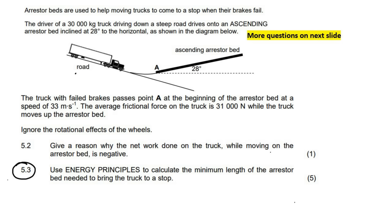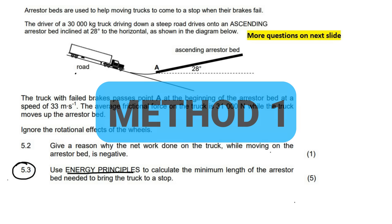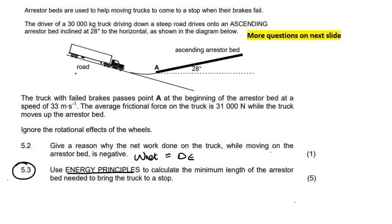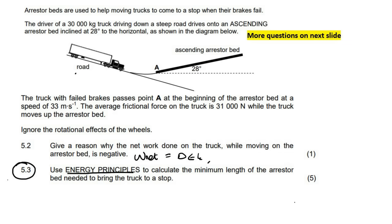I will show you two slightly different ways that learners like to handle this. When they say energy principles, that could be the W_net equals delta E_k formula, or it could be the W_NC equals delta E_k plus delta E_P formula. I'm going to use W_net equals delta E_k and show two different ways of handling the W_net side. The question asks to use energy principles to calculate the minimum length of the arrestor bed — how long it needs to be to bring the truck to a complete stop.